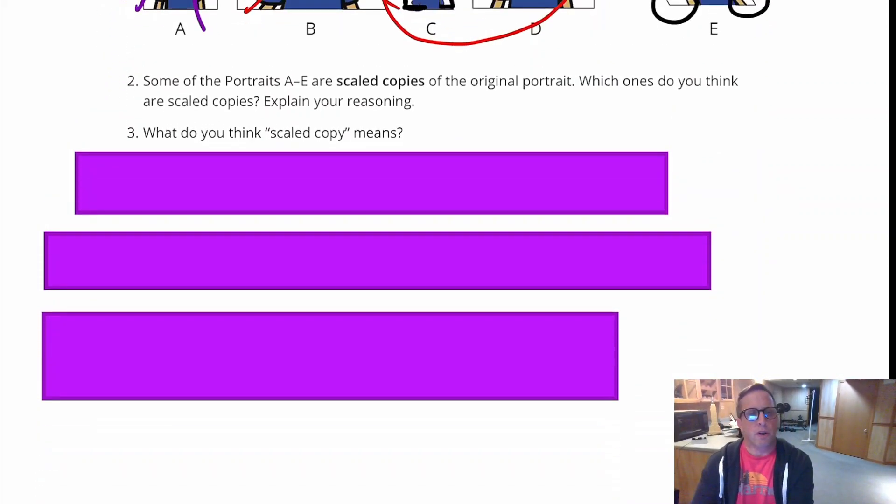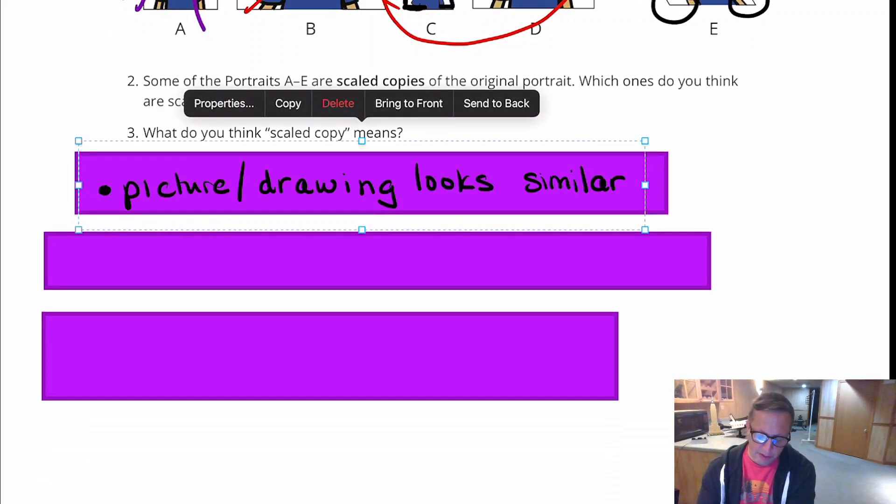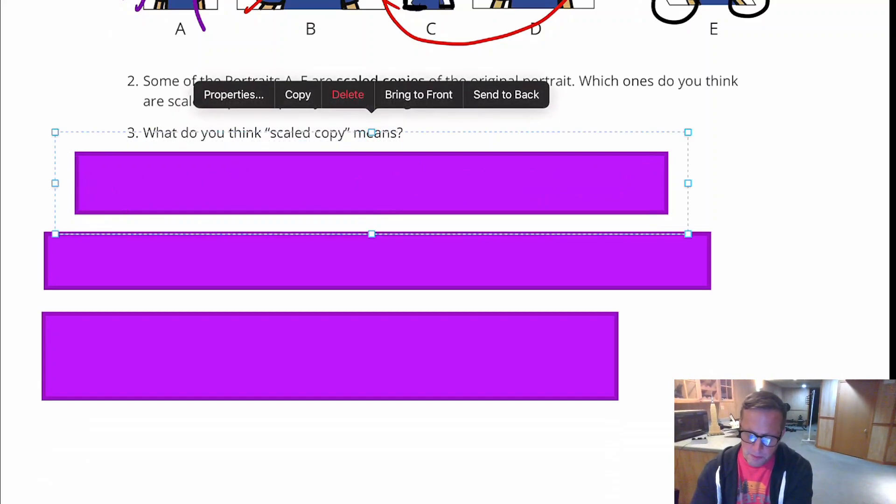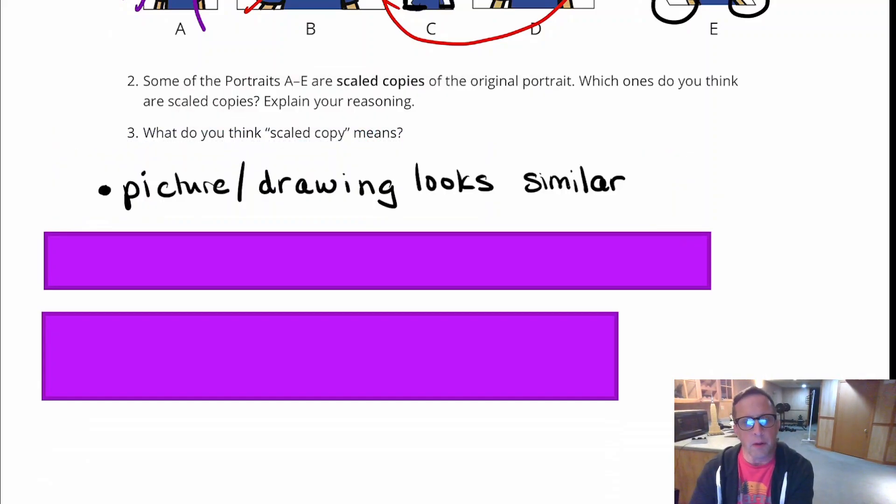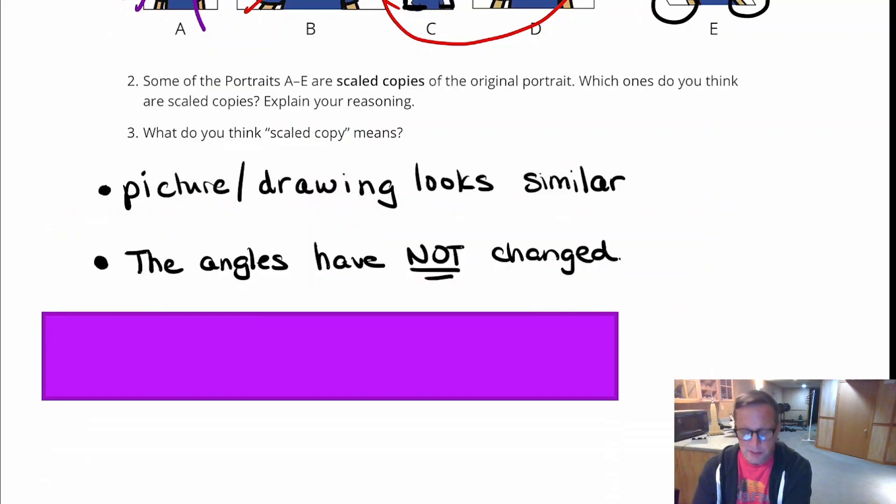What does scale copy mean? Well, scale copy is like right here, the picture or drawing looks similar. I'm not really getting too technical here, but it just looks the same. You can kind of just tell by looking at it. The next thing is that the angles have not changed.